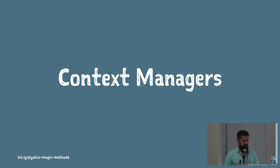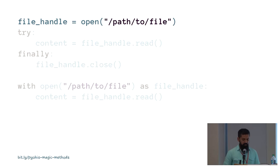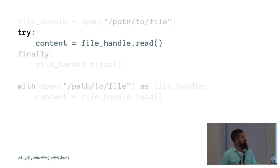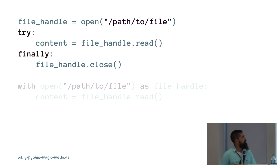Finally, let's look at context managers. These are useful for managing runtime contexts and are represented using a with statement. You may have seen them in the context of opening a file or acquiring a lock. For example, to read a file, you might use the built-in open function to get a handle, read within a try block, and close the handle in a finally block — because you always need to ensure the file handle gets closed even if an exception is raised.